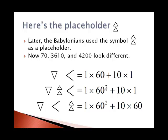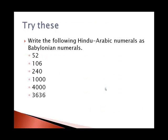What I'd like you to do now is pause the video and come up with what you think that Babylonian numerals would be written in cuneiform for 52, 106, 240, 1000, 4000, and 3636. You can pause it now.